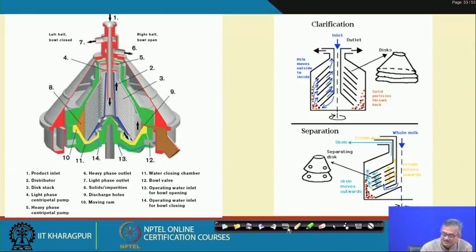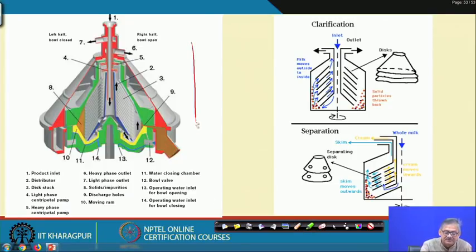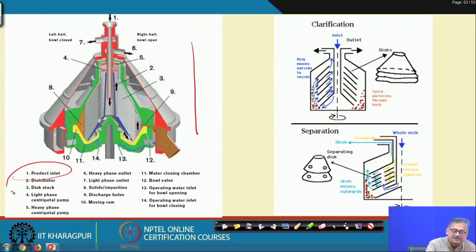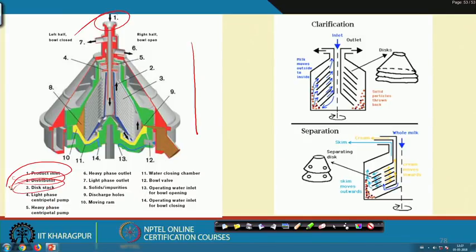Looking at a typical colored picture of a centrifugal separator, the components are: (1) product inlet, (2) distributor, (3) disk stack — multiple disks stacked together, (4) light phase centripetal pump, and (5) heavy phase centripetal pump.